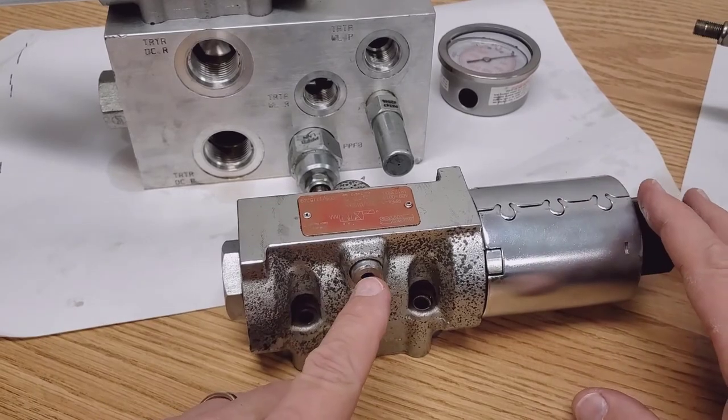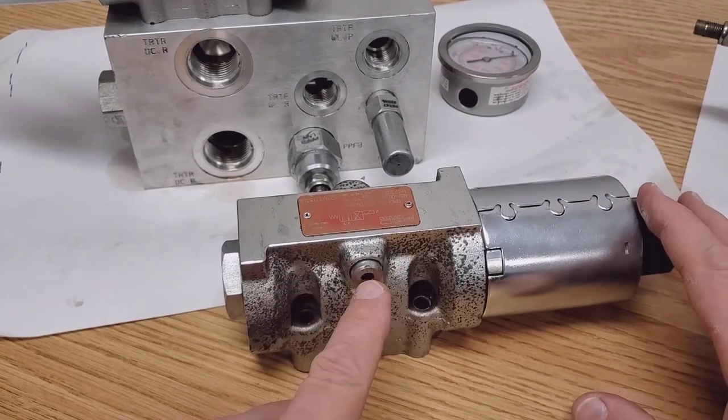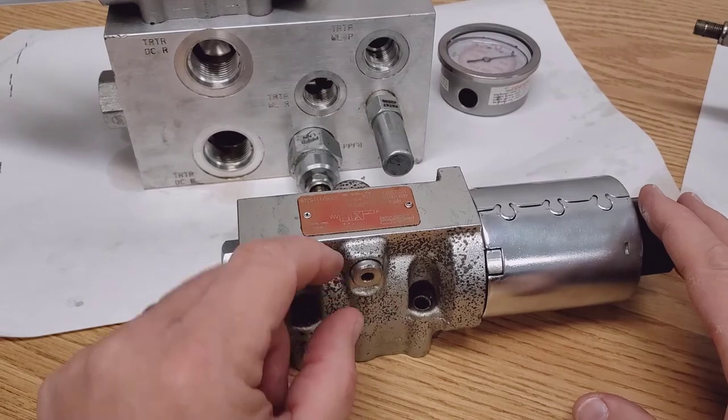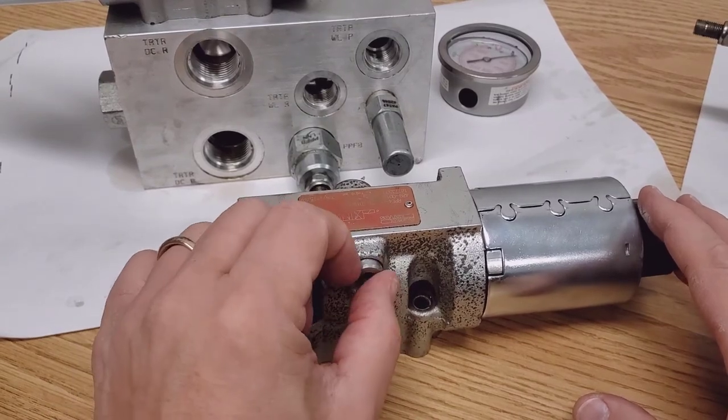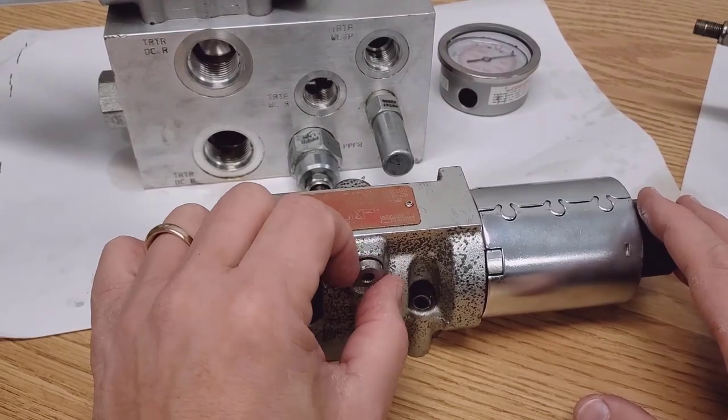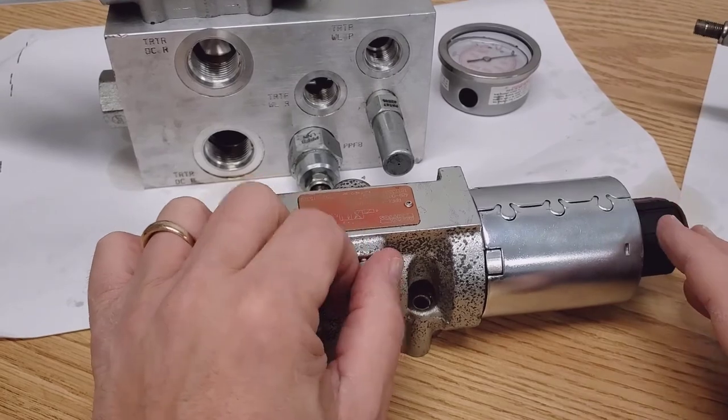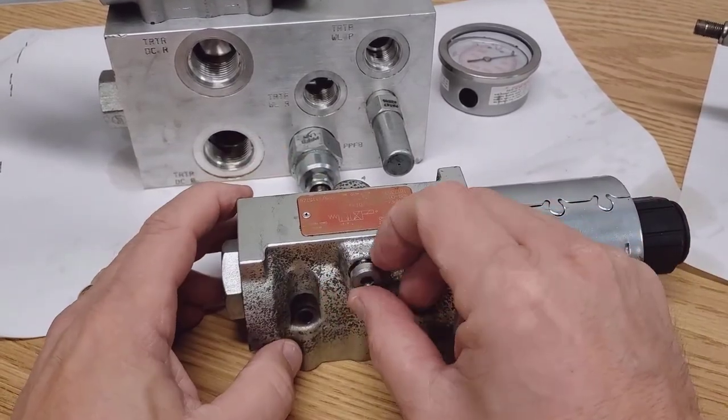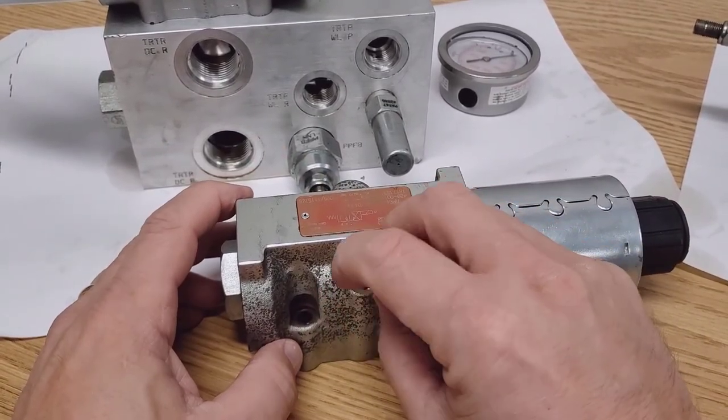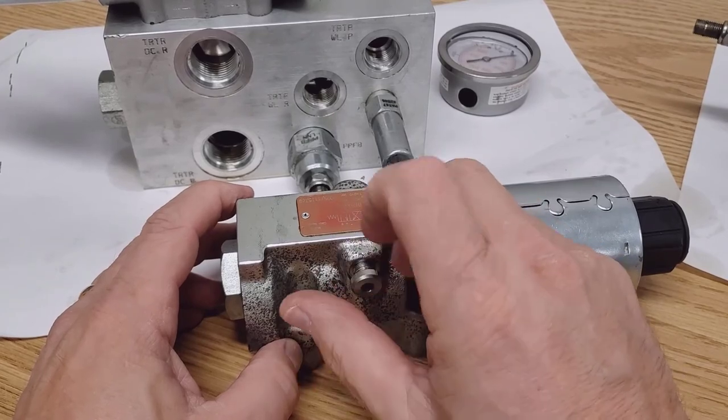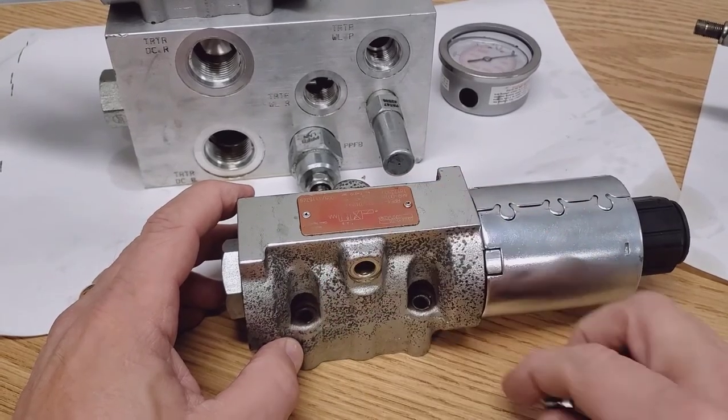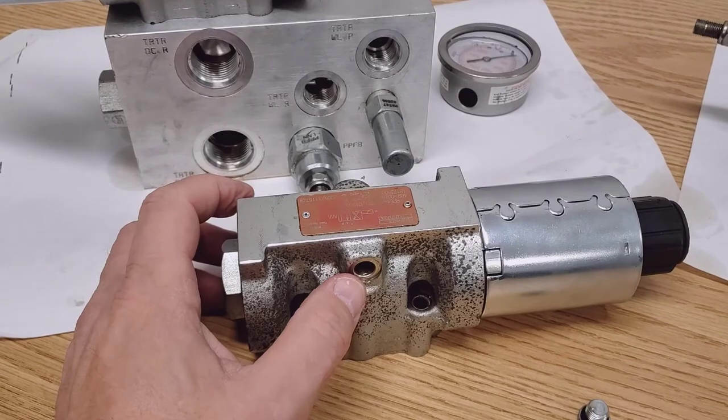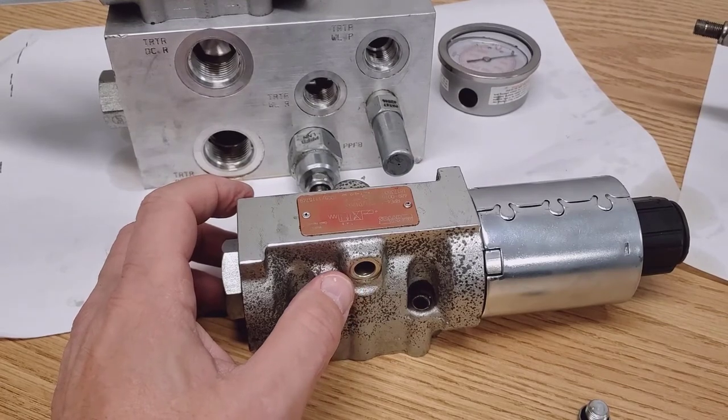But we figured out a way to dampen that effect with this solenoid. In the center of the spool, there is this plug. So it's a little Allen head plug. We could remove it.